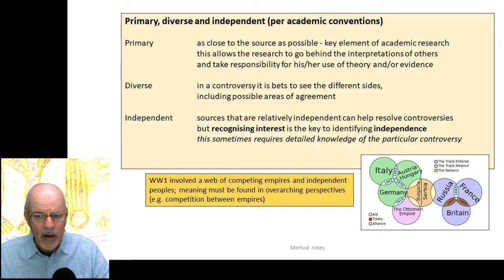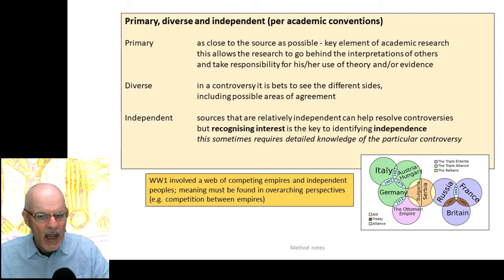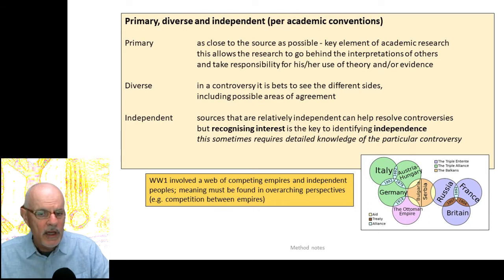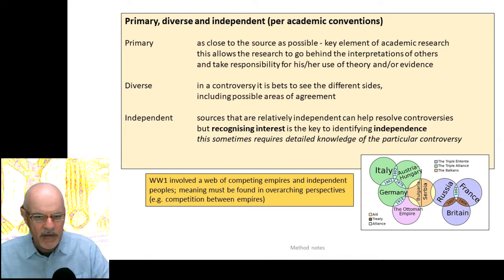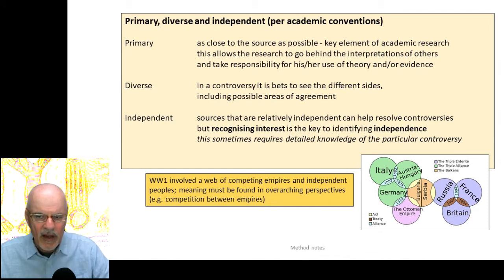For example, World War One involved a web of competing empires and independent peoples. We want general knowledge about what that war was about, and one of the more convincing overarching perspectives is that it was about competition between empires — the breakdown of some and the rise of others. Otherwise, it's a history with lots of detail that doesn't appear to have particular meaning, and it recurs when similar things happen in subsequent wars.